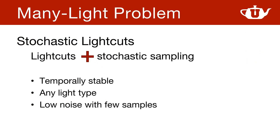The stochastic light cuts method introduced in this paper preserves the unmatched convergence rates of light cuts. On top of that, it is temporally stable, it can handle any type of light source, and it produces low noise with much fewer light samples, resulting in more than an order of magnitude faster lighting estimation.